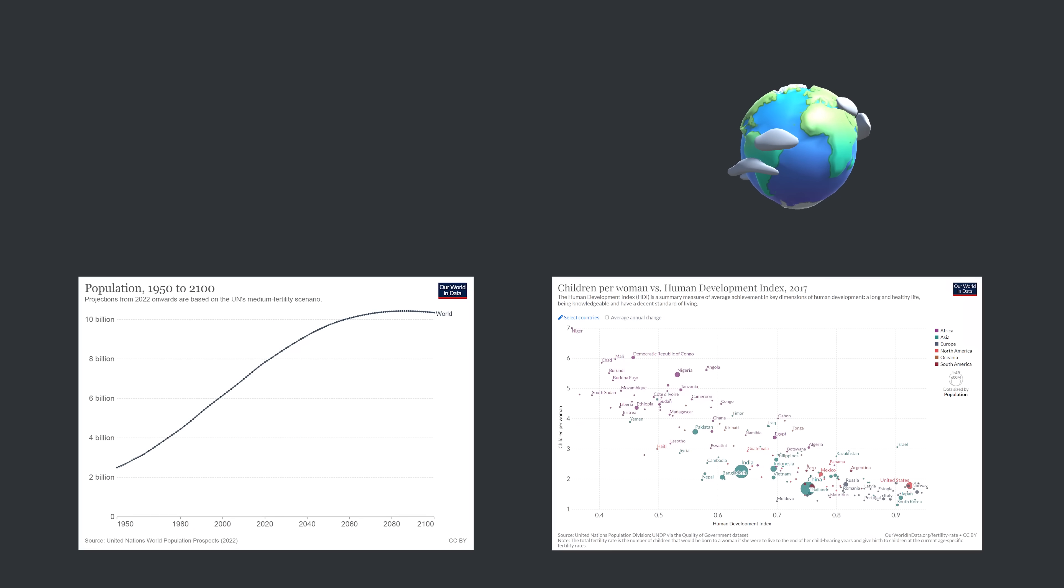The United Nations projects that this effect will cause the world population to peak at about 10.4 billion people around the end of this century. The UN also estimates that the global average lifespan at the end of the century will rise to about 82 years.